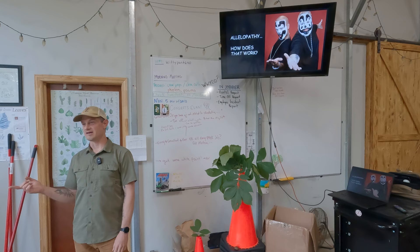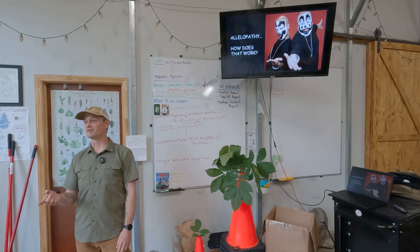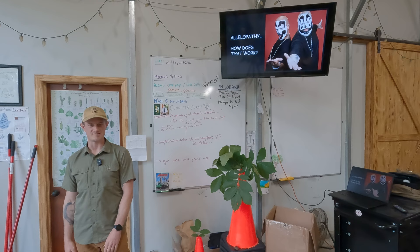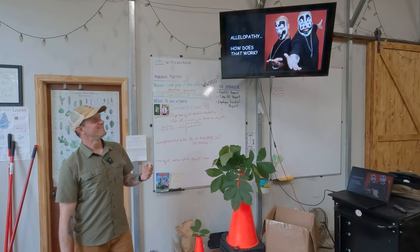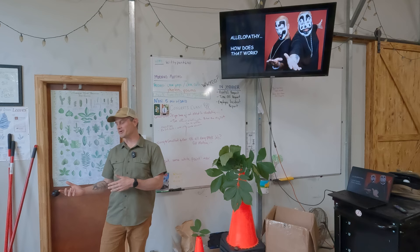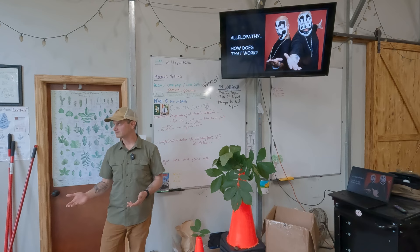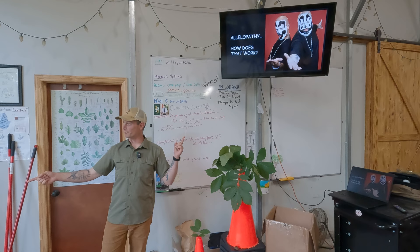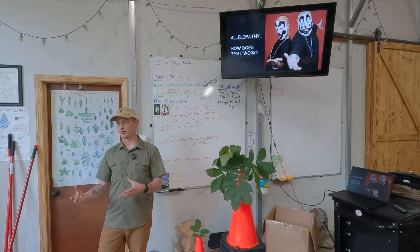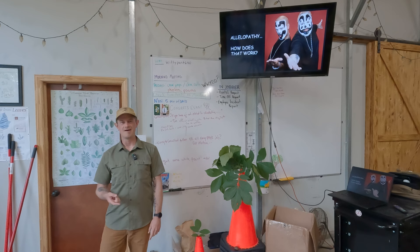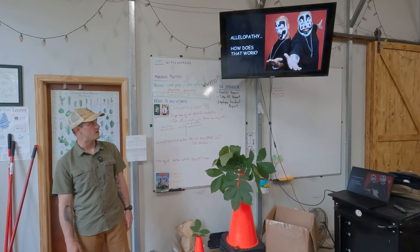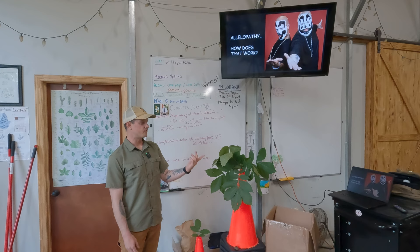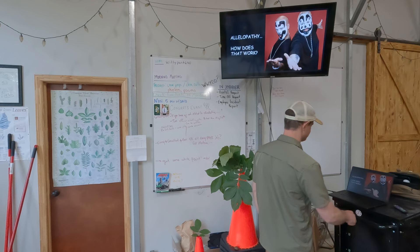Hickory belongs to the Juglandaceae family — the walnut family. That brings up the juglone connection: hickories don't produce juglone in the same concentration as black walnut, but they do produce it. Allelopathy is the process by which juglone, a chemical exuded by the roots and present in the leaves and stems, suppresses the growth of nearby plants.